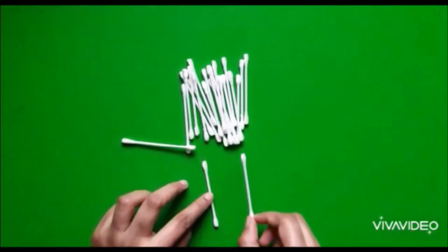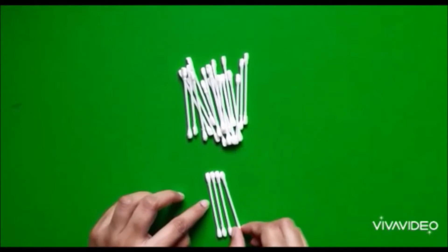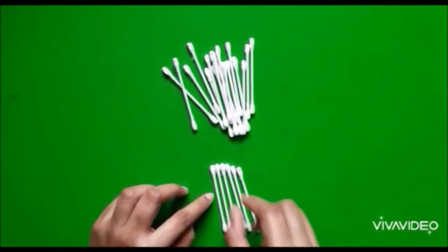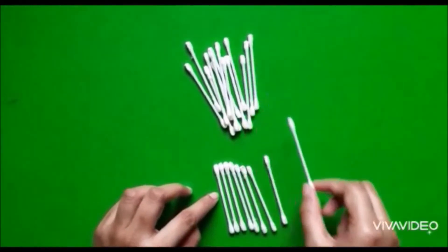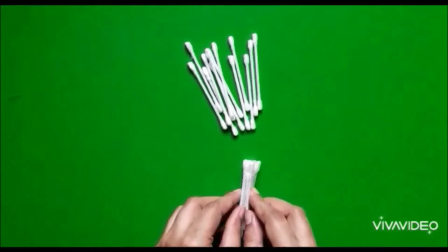First bundle: 1, 2, 3, 4, 5, 6, 7, 8, 9, 10. Let's tie with a rubber band.